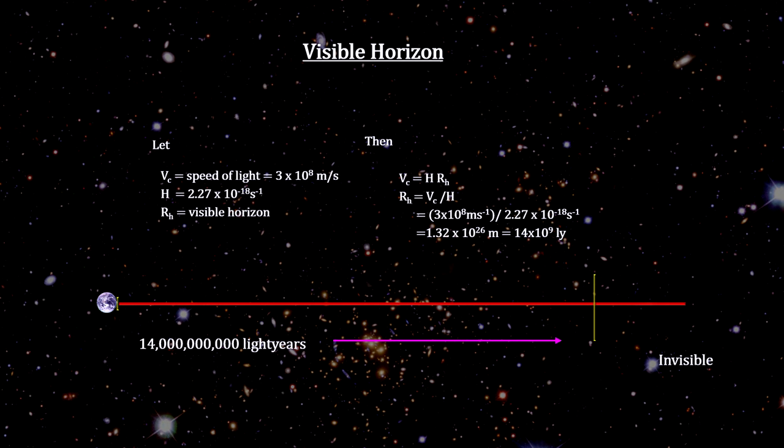Plugging in the numbers, we find that all galaxies beyond 14 billion light years could never be seen here. GN-z11 is now 32 billion light years away, so the light that is leaving GN-z11 now will never reach us.